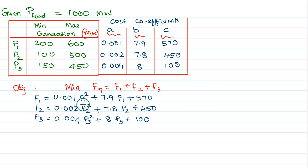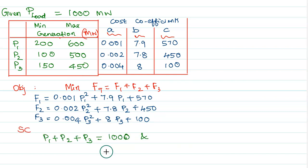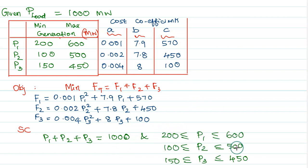The generalized equation is A·P² + B·P + C. The total of F1, F2, F3 should be minimized subject to the constraint P1 + P2 + P3 = 1000, which is the power demand-generation equality constraint. The boundary conditions are: P1 between 200 and 600, P2 between 100 and 500 megawatt, and P3 between 150 and 450 megawatt.